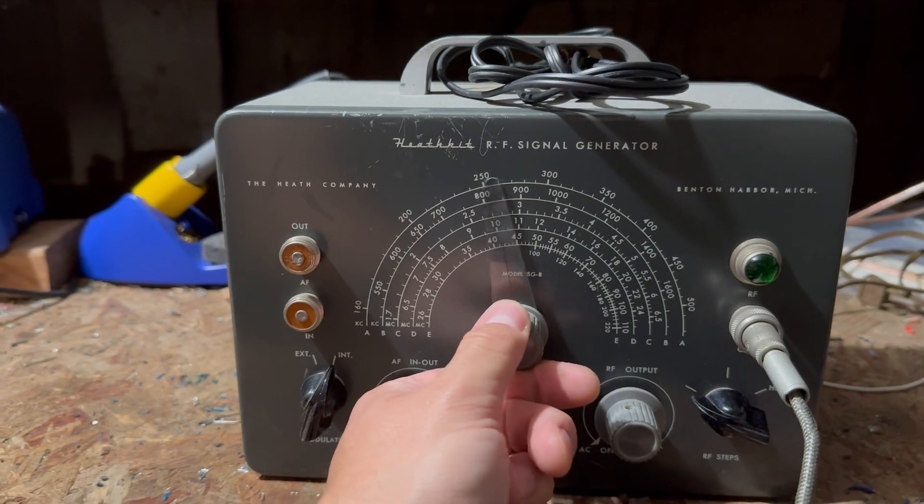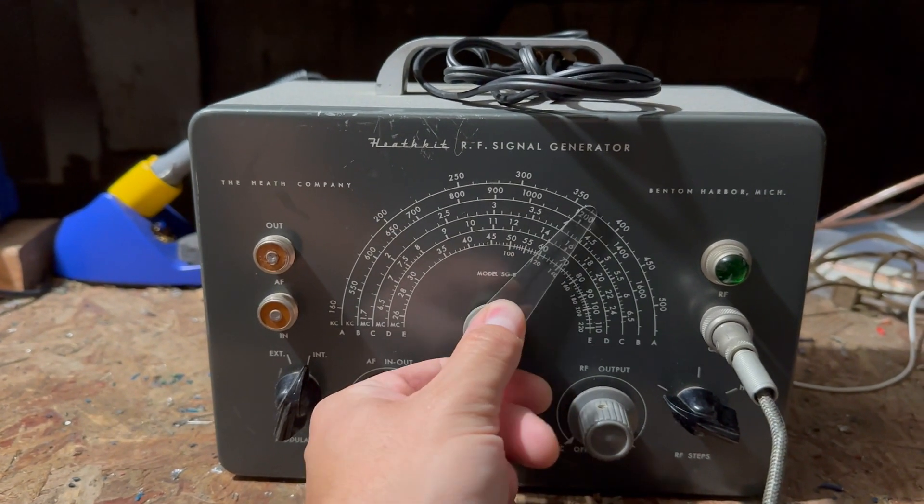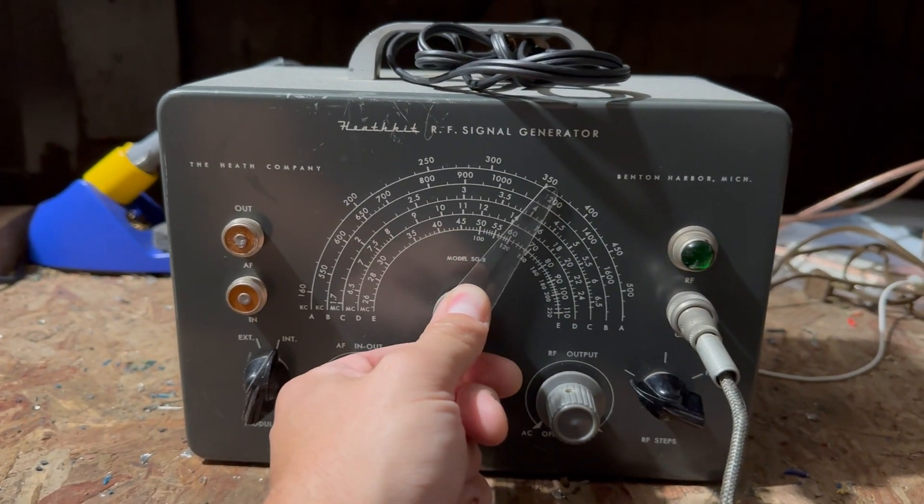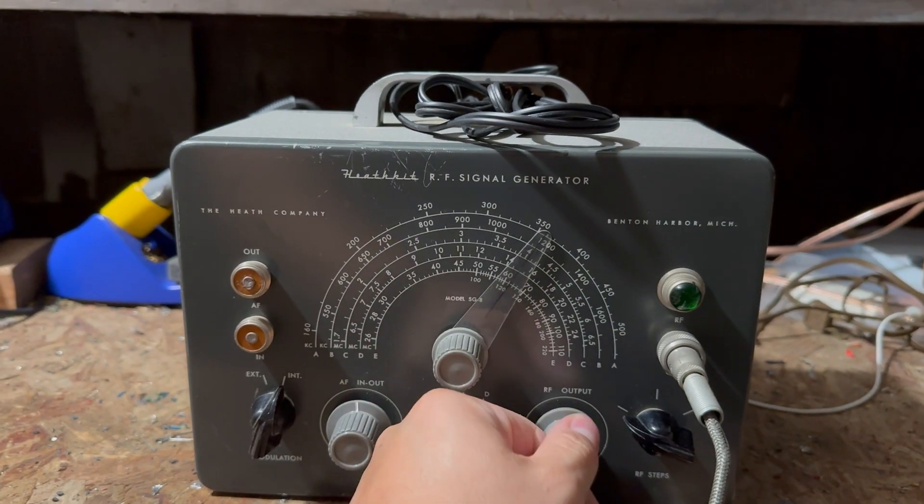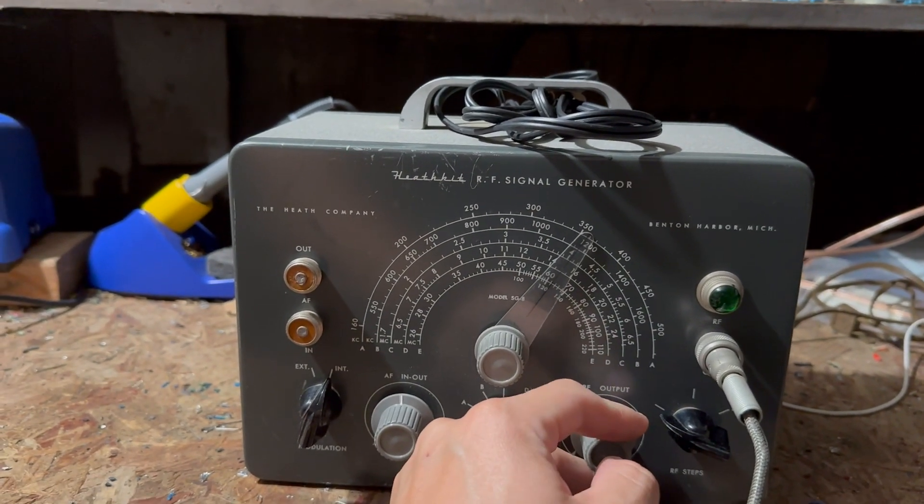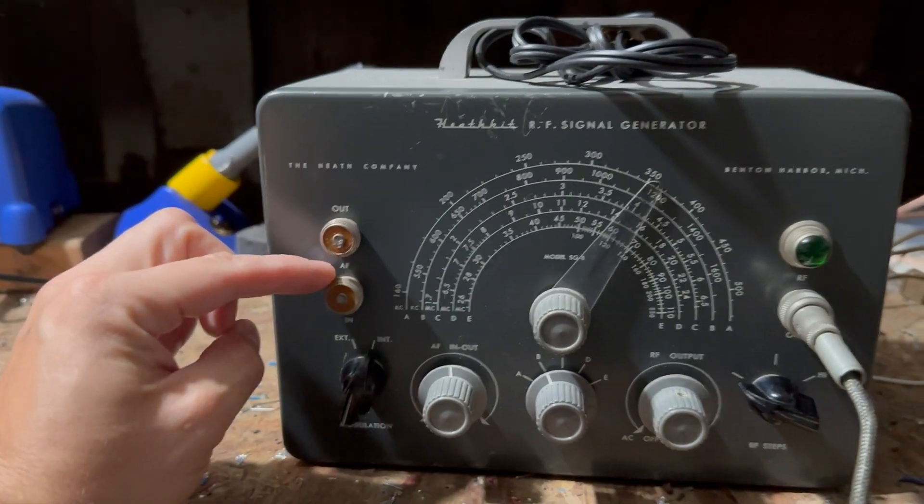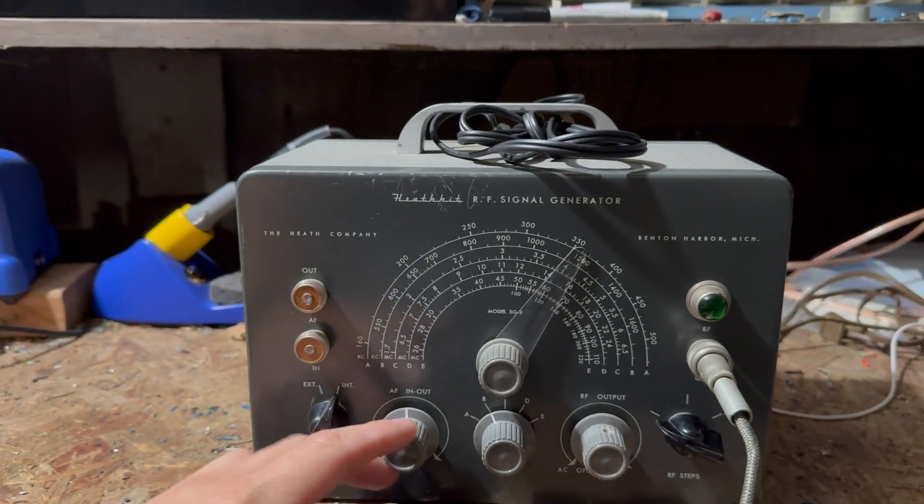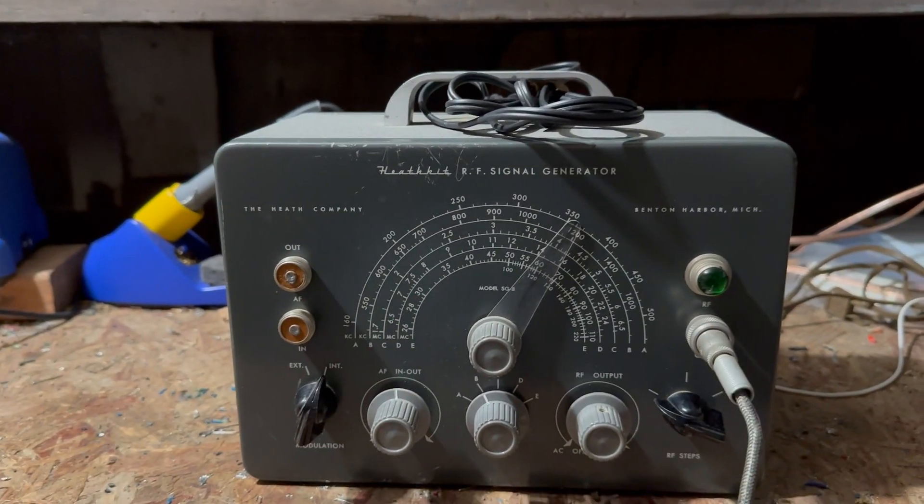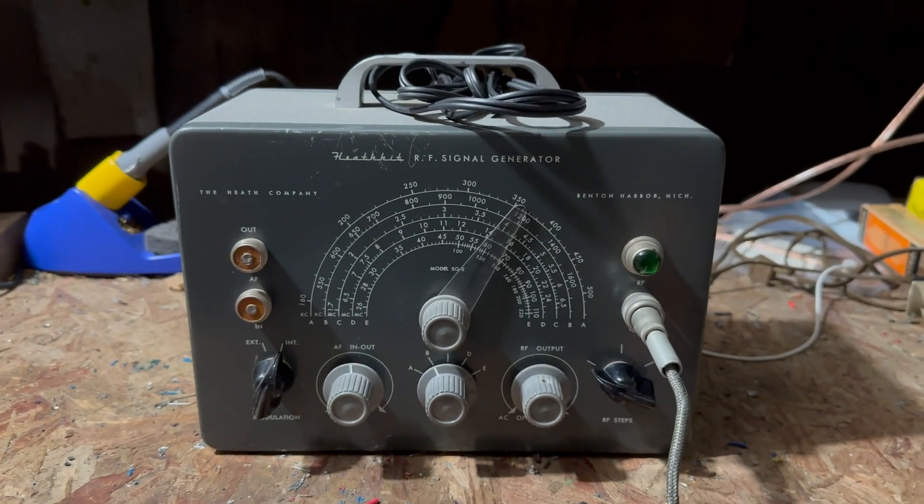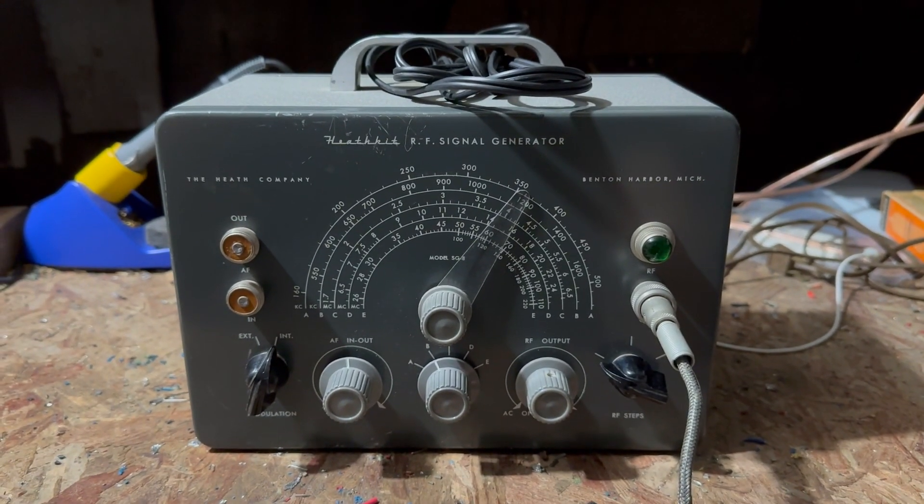It's essentially just an oscillator and you can adjust it by tuning it like this. You have either an RF output or an audio output as well. It's basically just an oscillator and what it does is it helps you figure out what stage of the radio is working.